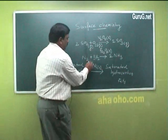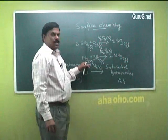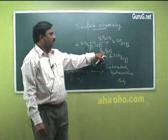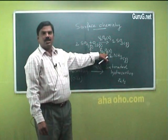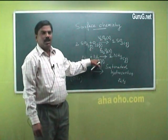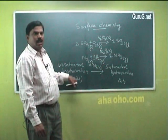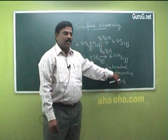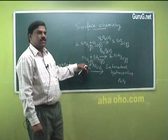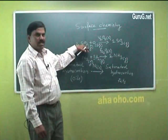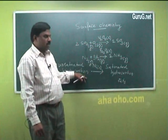Another reaction: N2 gas and H2 gas are adsorbed on the solid surface of Fe2O3, giving ammonia gas. Another example: unsaturated hydrocarbon (oils) adsorbed on the nickel surface gives saturated hydrocarbon (fats). In the first reaction, the solid is V2O5; in the second, Fe2O3; and in the third, nickel solid.